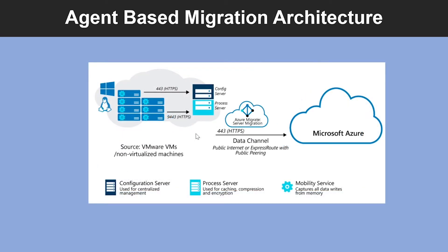Let's look into the agent-based migration architecture for VMware VMs to Azure. The core requirements are: first, you need an Azure subscription, Azure storage account, managed disks, and a network. Then you need a configuration server VM hosted on VMware, and you need to have an ESXi and vCenter host. Next, configure the mobility service on all VMware VMs you want to replicate or migrate. Finally, configure your Azure storage.